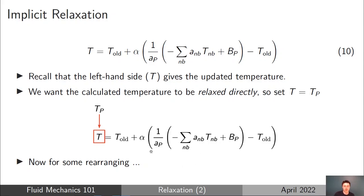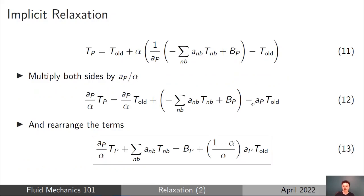After substituting T equals TP and rearranging, we multiply both sides by AP over alpha. Sorting out the brackets, we get AP times T old — the value from the previous iteration — and then rearranging gives us the form in equation 13. This looks a bit messy with a lot of terms, but a side-by-side comparison reveals what has actually happened when we apply the implicit relaxation.